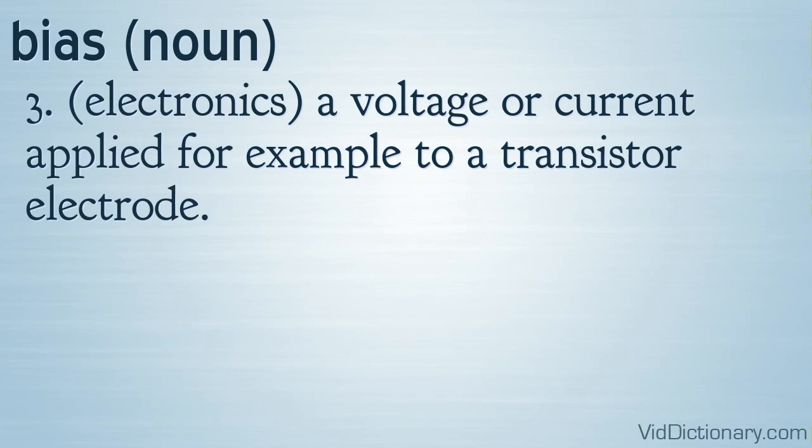Definition 3. Electronics: a voltage or current applied, for example, to a transistor electrode.